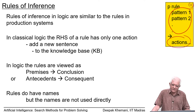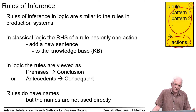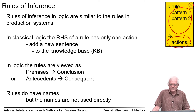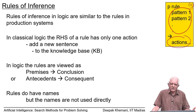If the premises or antecedents are given to you, then you can add, make, or infer the conclusion — the consequent — and add it to the knowledge base. We are talking about processing reasoning, the manipulation of symbols. Rules do have names, and we will see them very quickly, but the names are not used directly in the reasoning engine.